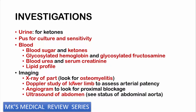Investigations include urine testing for ketones, and a pus swab for culture, microscopy, and sensitivity — important for guiding antibiotic therapy. Blood investigations include blood sugar and ketones, and glycosylated hemoglobin to assess glucose control over the past three months. A more accurate test is glycosylated fructosamine. Order blood urea, serum creatinine, and a lipid profile to assess renal involvement and atherosclerosis.